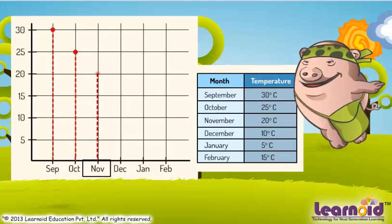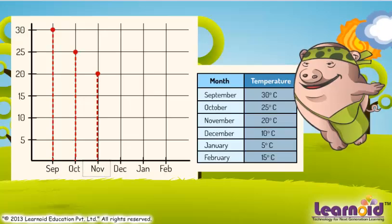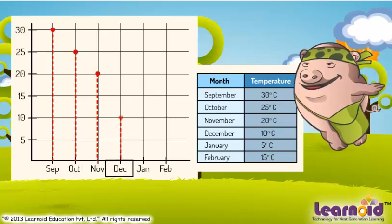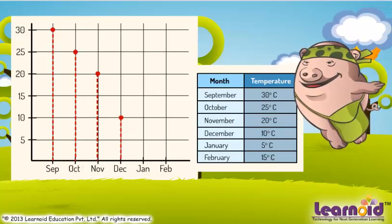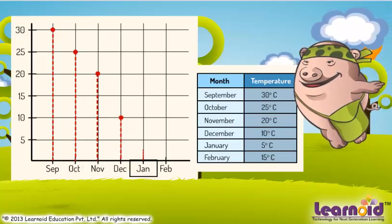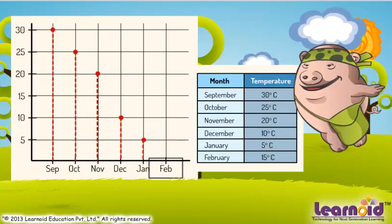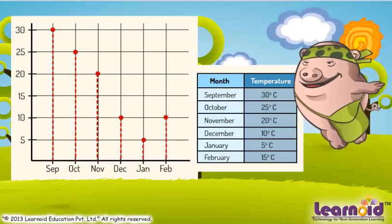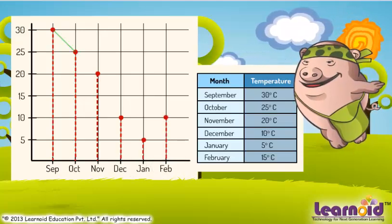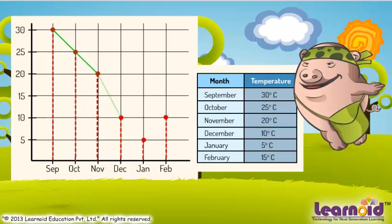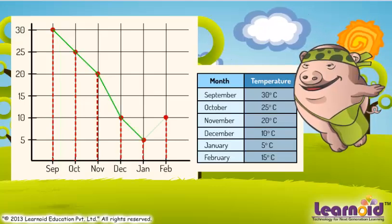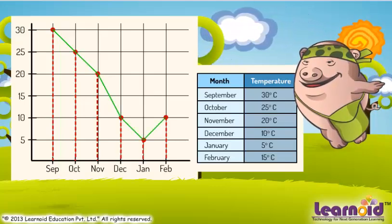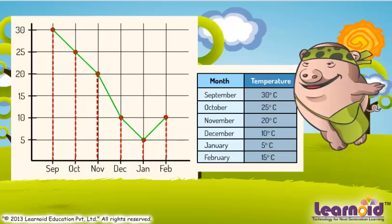For November, mark 20. December, mark 10. January, mark 5. February, mark 15. Once we mark the temperature of all months, the graph is complete.